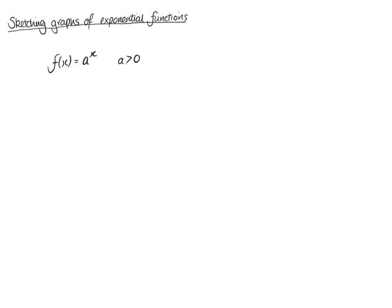The next step for us with drawing graphs is going to be looking at sketching exponential functions. We've looked at exponential functions so far, and these come in the form f of x equals a to the power of x. a has to be greater than 0, but a can't equal 1. That's just because when a is 1, your graph just becomes a straight line, so that's not an exponential.